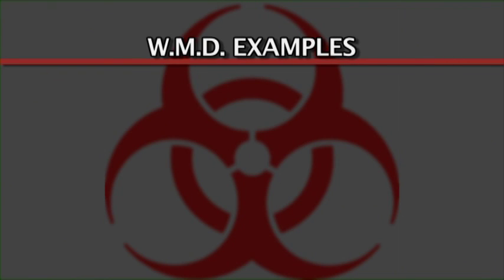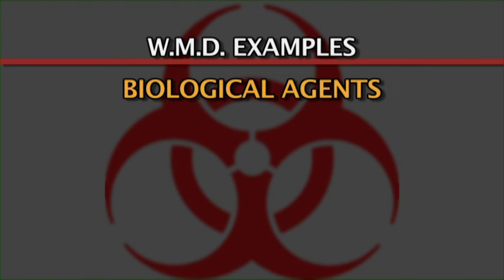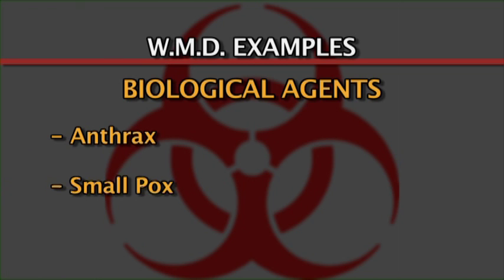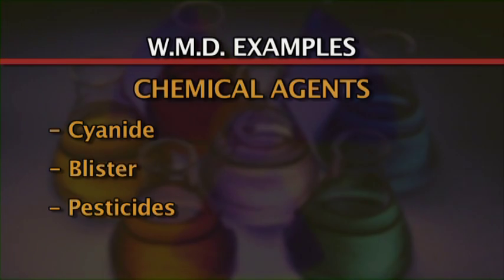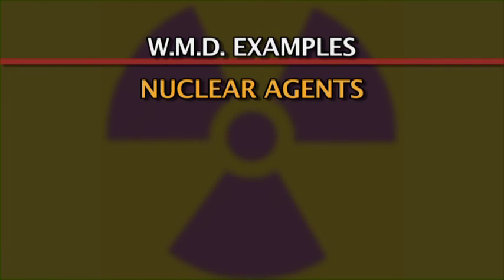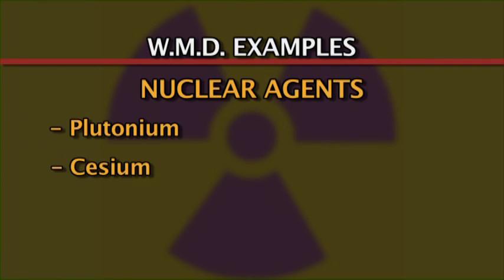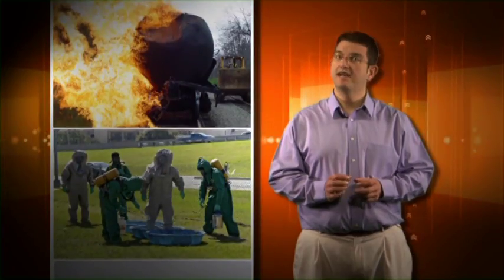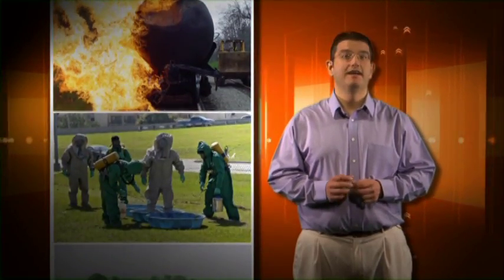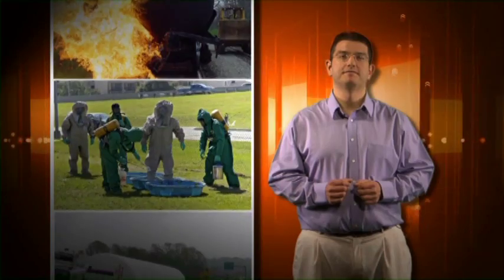Now let's look at a few WMD examples. Biological agents include things like anthrax and smallpox. Chemical agents would be nerve agents, cyanide, blister agents, and pesticides. Nuclear agents include plutonium, cesium, cobalt, and uranium — scary stuff that can create some very dangerous situations.